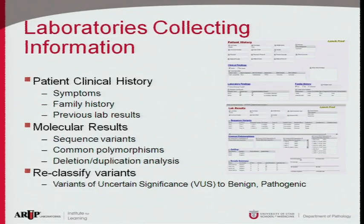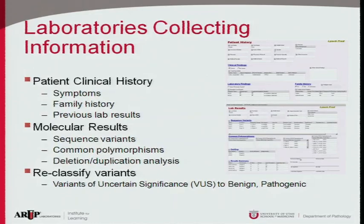There are things the laboratory can do: we have clients sending patients from many places, and if we collect symptoms, family history, and previous lab results, we can combine this with molecular results, sequence variants, known common polymorphisms, and deletion/duplication analysis. We also need to track when we actually have enough evidence to reclassify. Truthfully, we've done very little reclassification — the evidence coming in has been very slow.